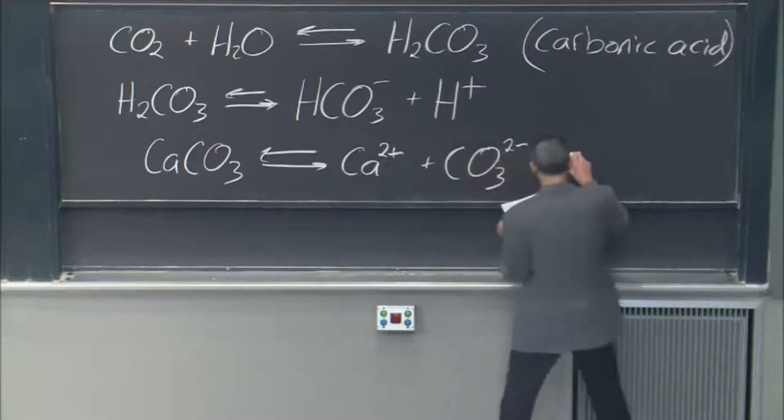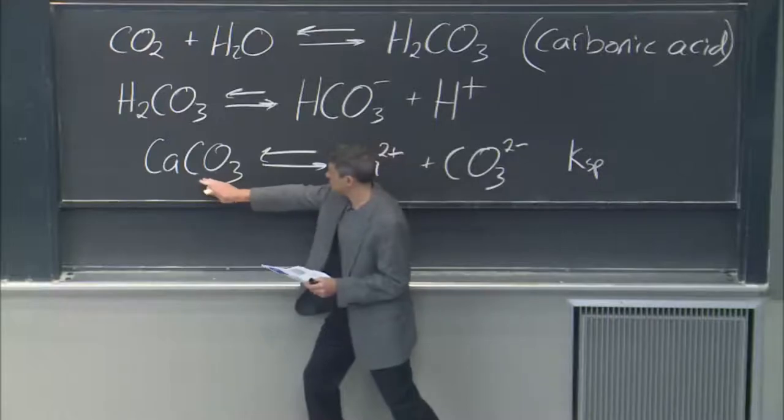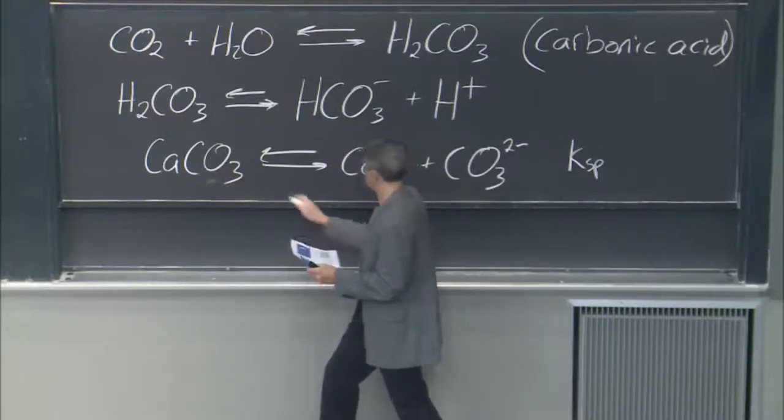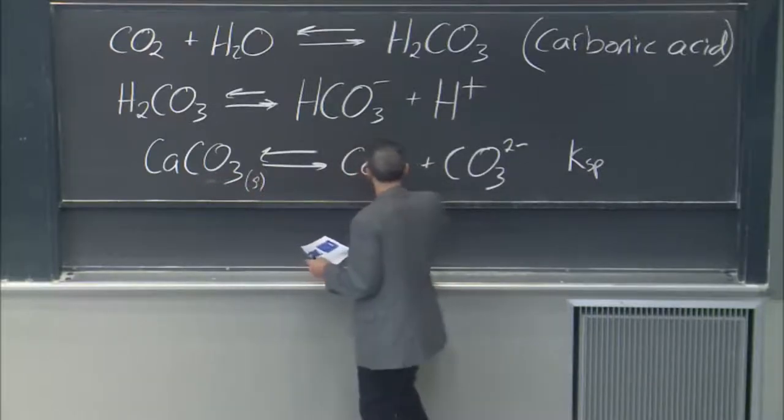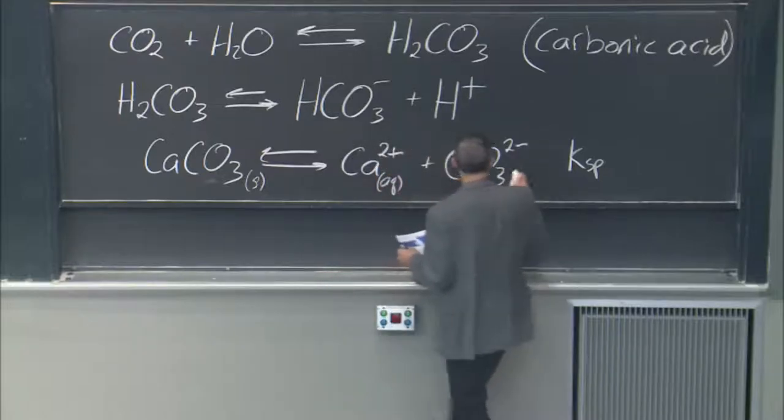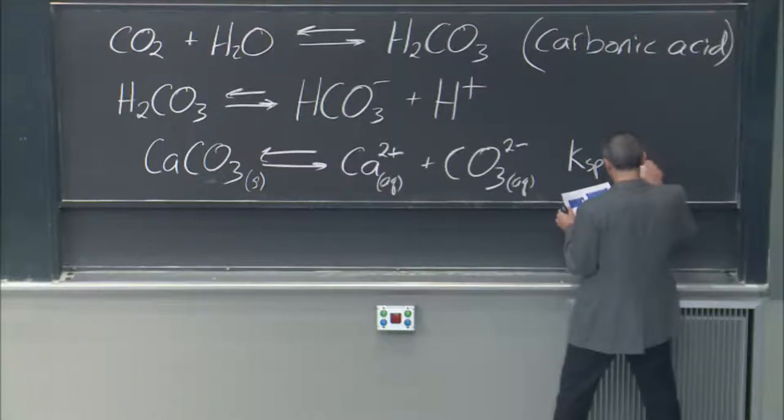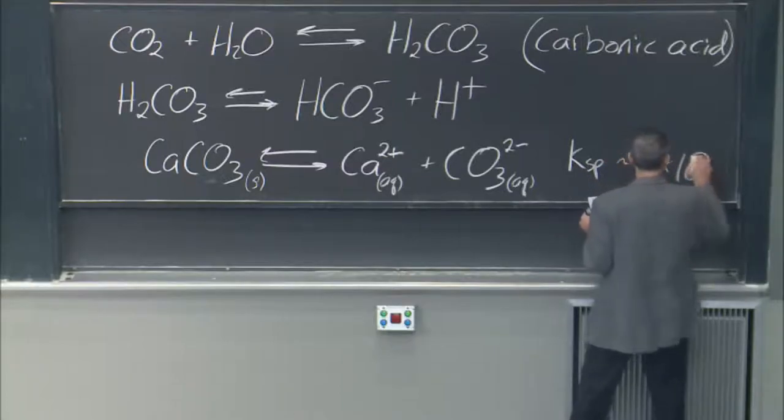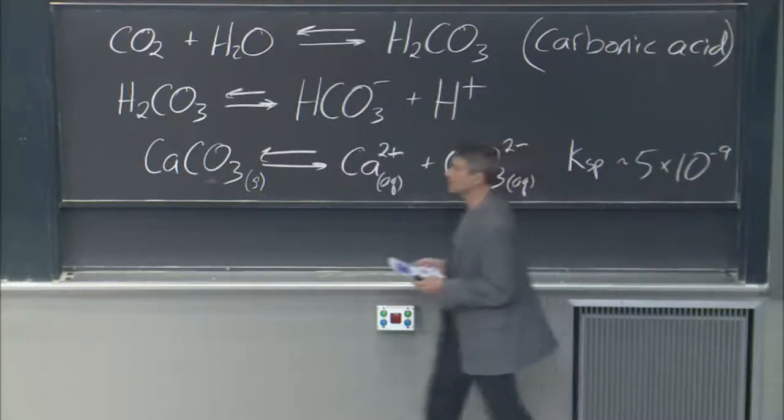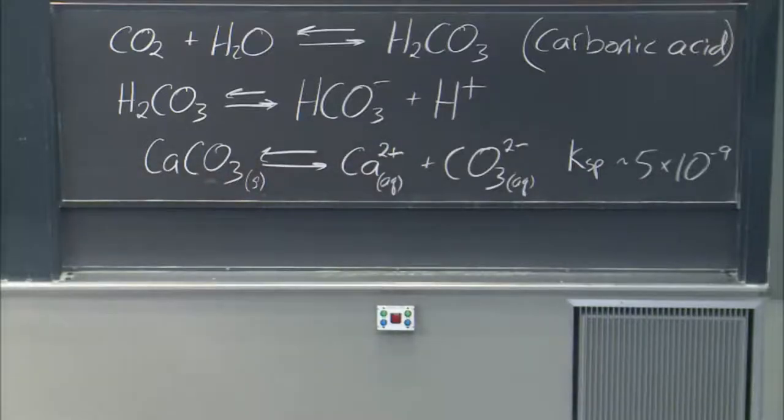All these have equilibrium constants. So for example, for this one, the Ksp, the solubility product constant, because this is a solid—this is a solid shell. Solid going to ions in aqueous solution. So the Ksp for that is somewhere around 5 times 10 to the minus ninth.